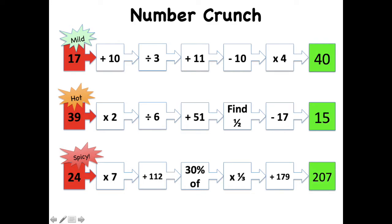And here are the answers. How did you get on? The first one, the mild challenge, the answer is 40. The next one, the answer is 15. And the last one of all, the really tricky one, the answer is 207.